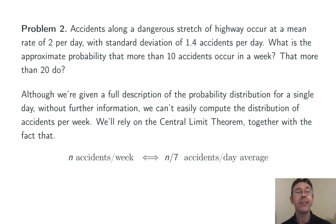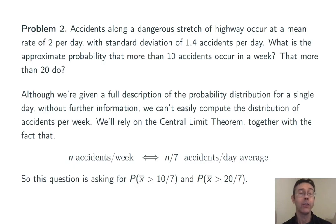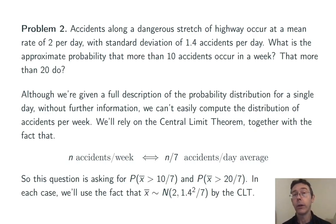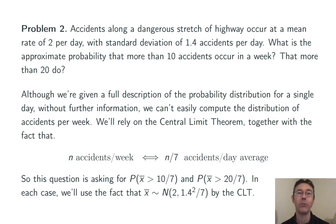N accidents per week is the same as having N divided by 7 accidents per day on average. So to get the probability that we have more than 10 accidents in a week, we're actually going to compute the probability that x-bar is greater than 10/7 for a sample size of 7. And to get the probability for more than 20 accidents in a week, we compute the probability that the average number of accidents per day is greater than 20/7. In each case we rely on the CLT: with sample size 7, x-bar is approximately normal with mean 2 and variance 1.4 squared divided by 7, so standard deviation 1.4 over the square root of 7.